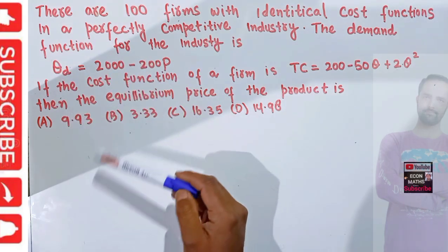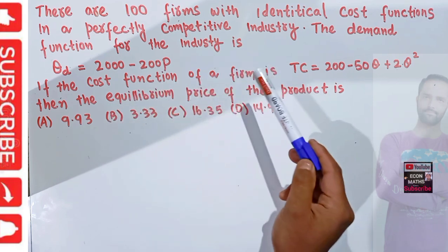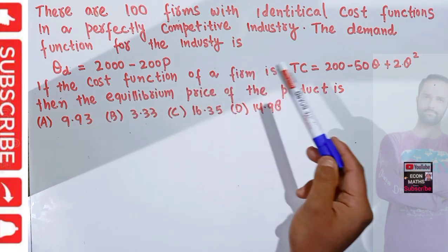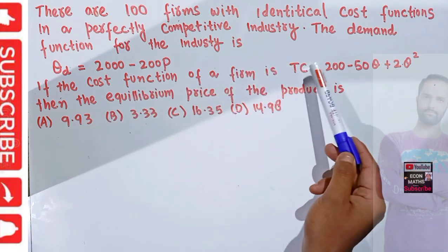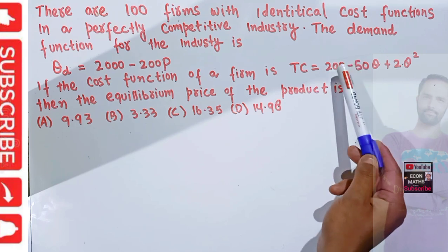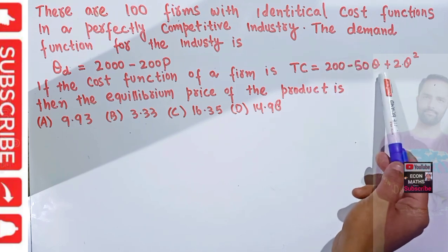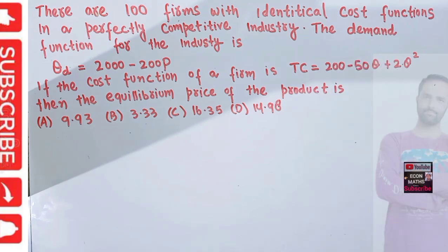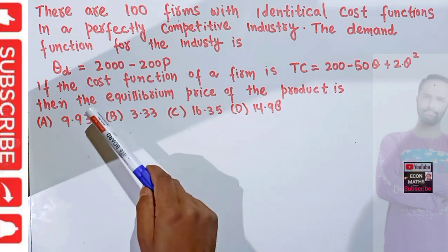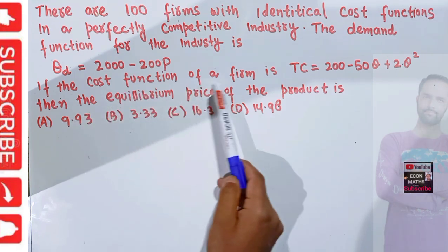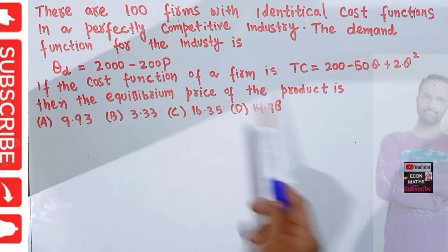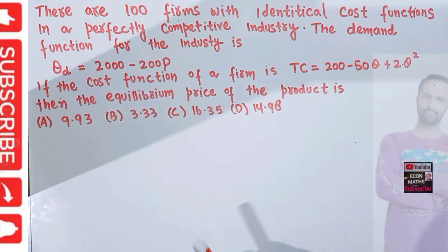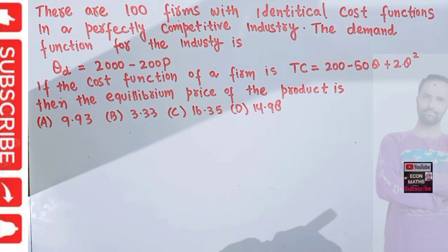The cost function for a firm is given by: Total Cost = 200 − 50Q + 2Q², where Q denotes the firm's output. We need to find the equilibrium price of the product from the given options.